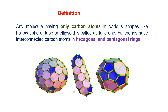Philorenes have interconnected carbon atoms. This green area represents carbon atoms which are arranged in hexagonal and pentagonal ring form. This ring is a hexagonal ring and this one is a pentagonal ring; when these are connected with each other through carbon atoms it will produce philorenes.